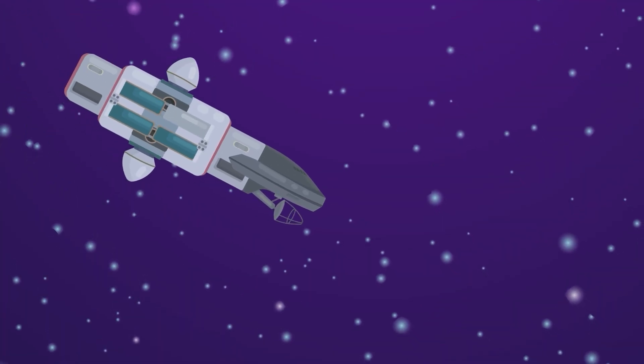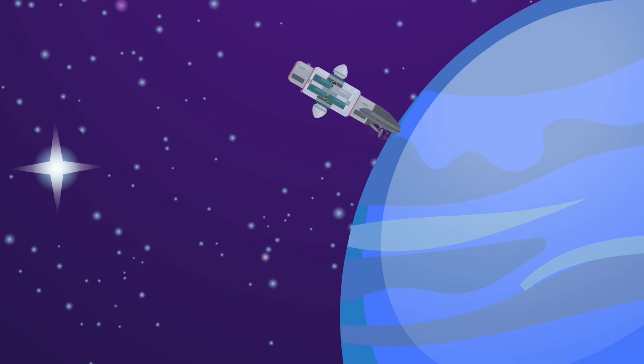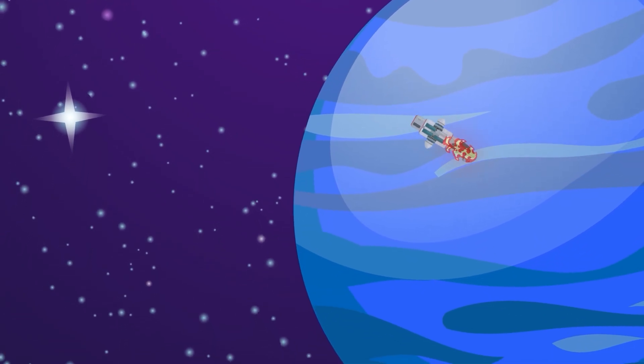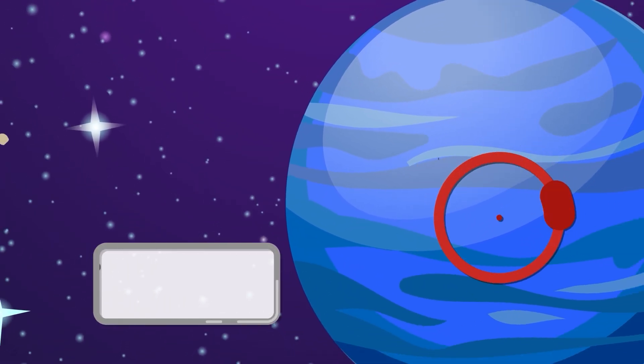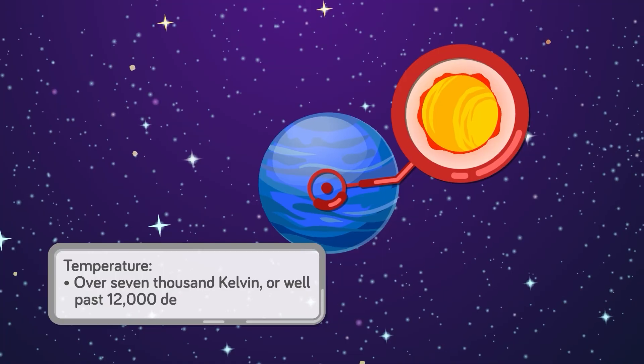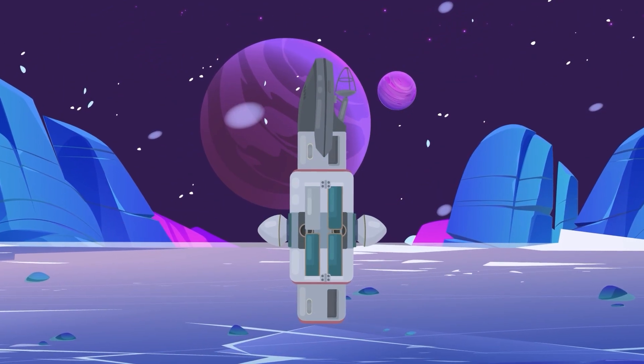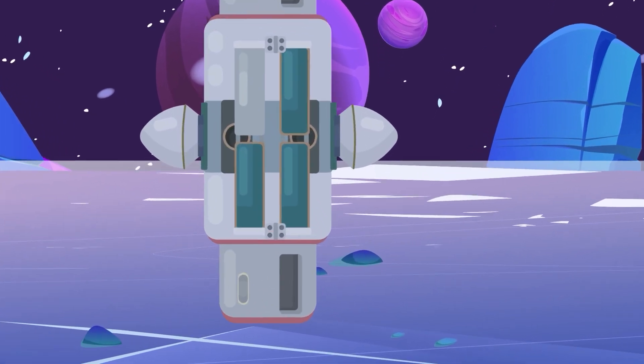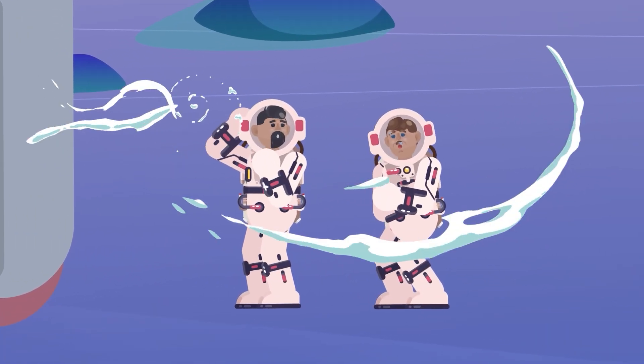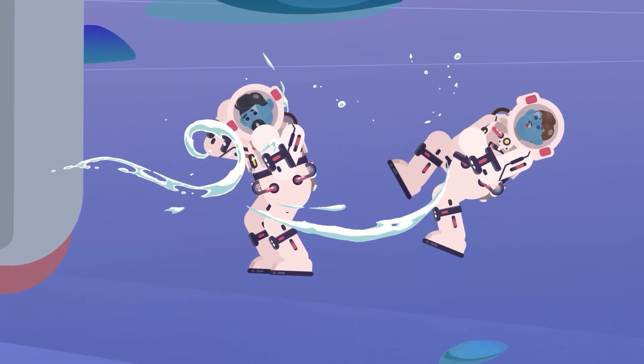Traveling closer to Neptune, it's likely that after breaching the atmosphere, a vessel would essentially freefall straight toward the ice giant's core, which has a temperature of over 7,000 Kelvin, or well past 12,000 degrees Fahrenheit. But even making it through the atmosphere would be a short-lived feat, and one that would be nearly impossible to survive thanks to the harsh conditions Neptune has to offer.